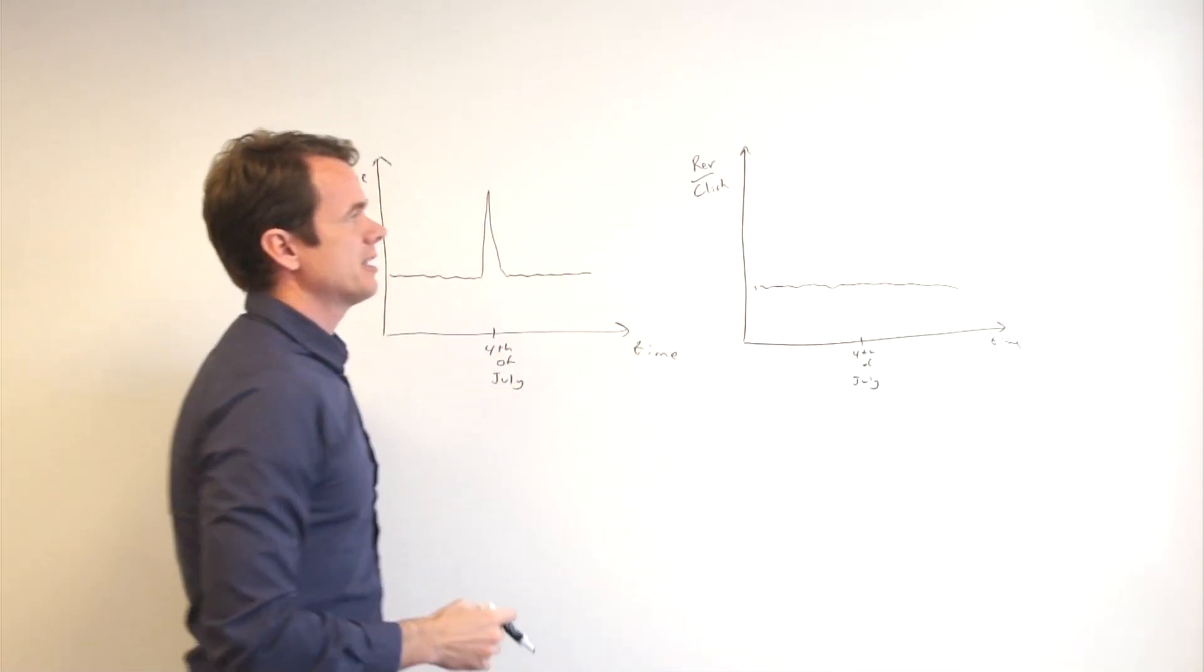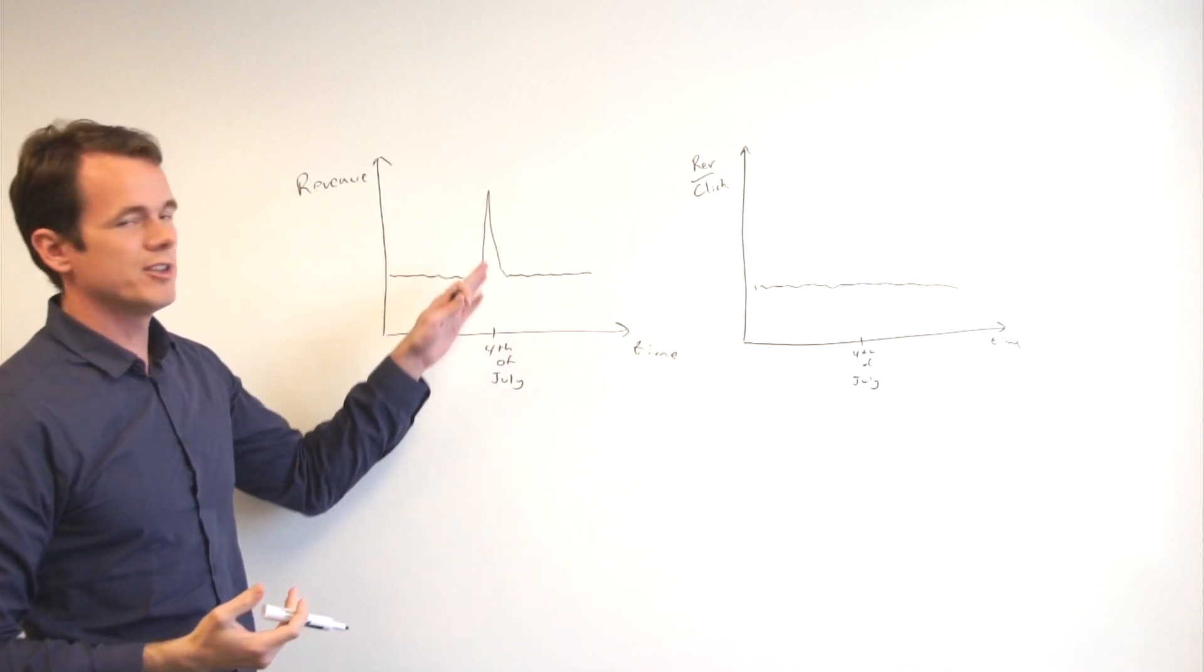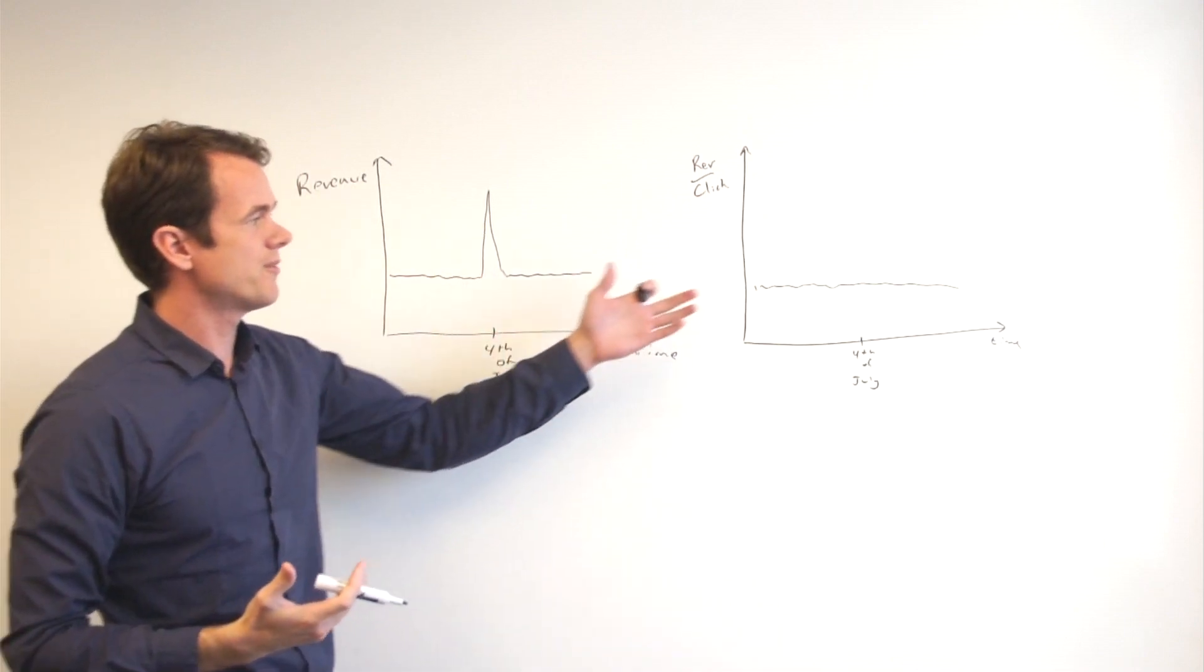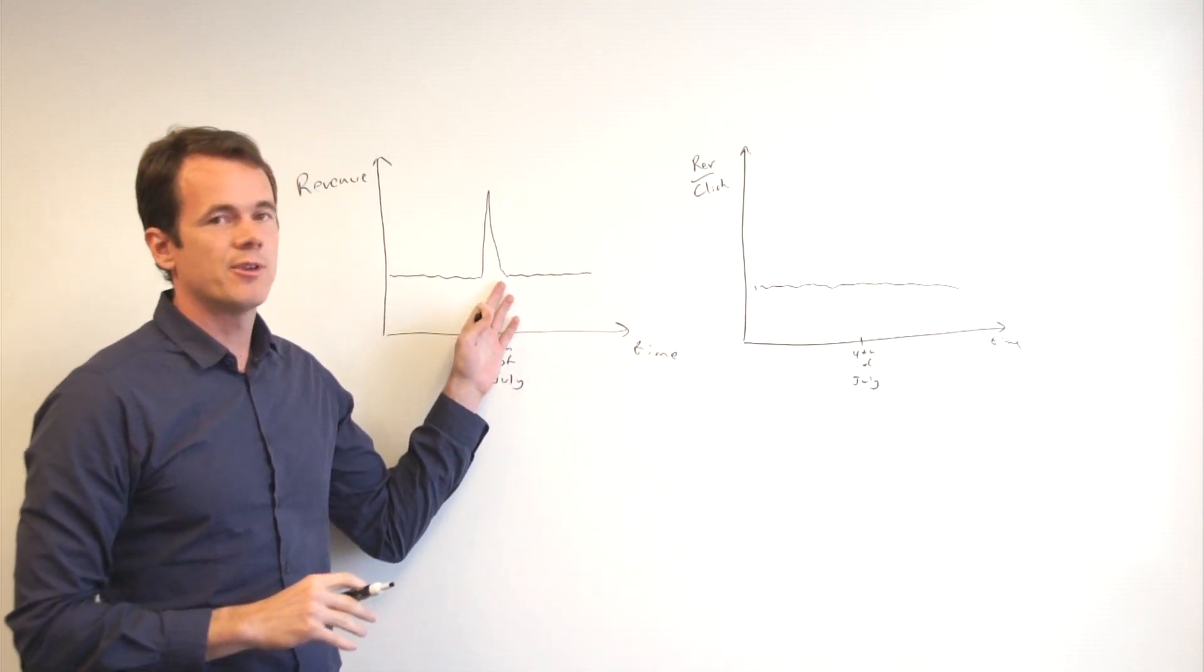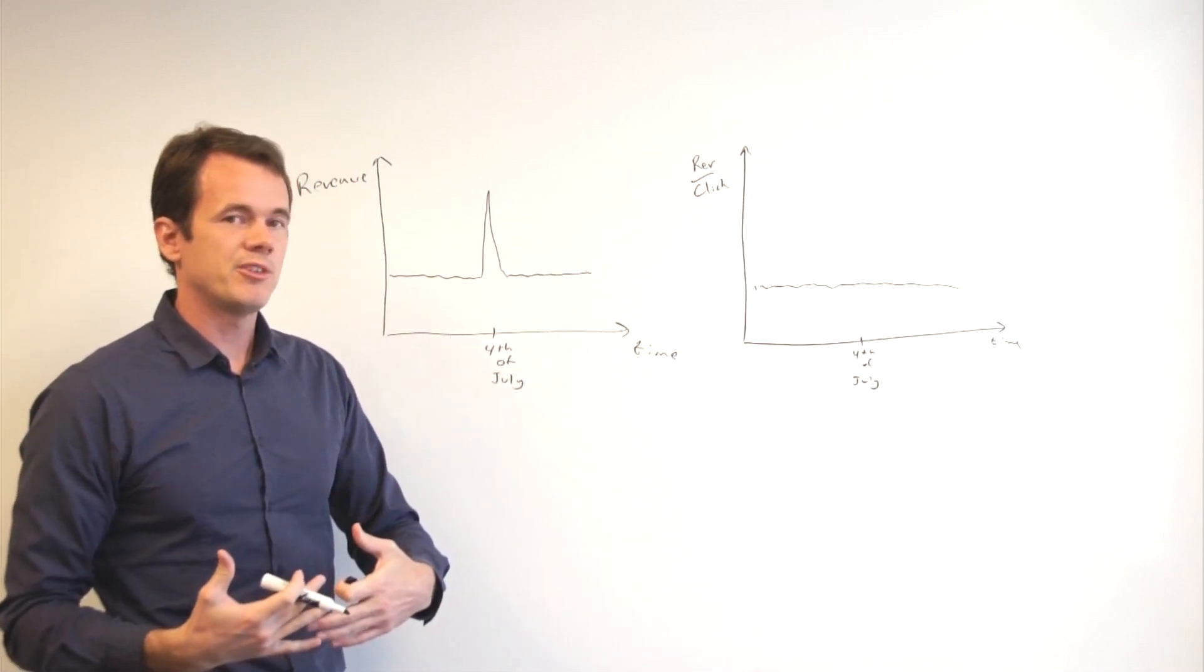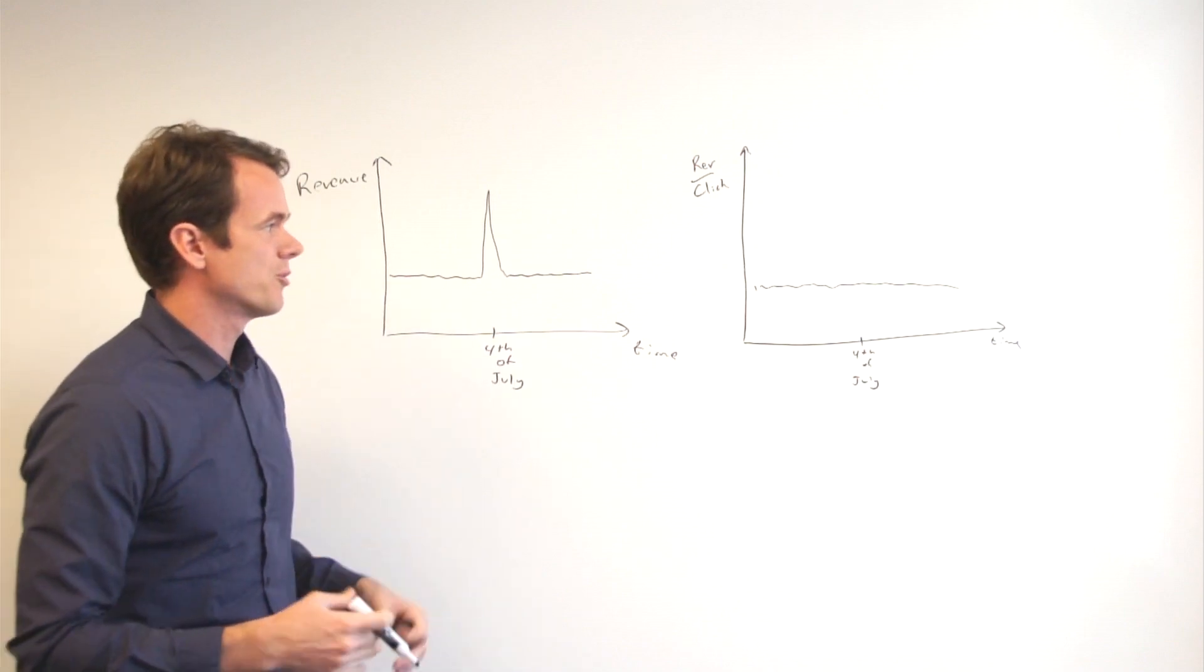If your revenue per click is constant, so you get more revenue but you're getting more clicks and so the revenue per click is constant, you don't need to make any adjustments to your bids. You're going to get this added revenue because you're going to be in the same position and you're going to be getting more clicks and more revenue from it.